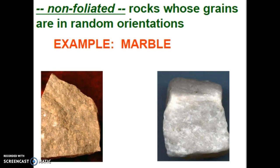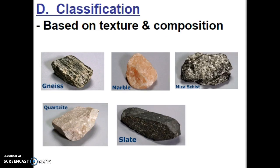An example of a non-foliated metamorphic rock is marble. Marble occurs when limestone undergoes heat, pressure, or chemical activity. We classify metamorphic rocks based on their texture — whether they're foliated or non-foliated — and their composition, meaning what types of minerals make up these rocks. Gneiss is formed from granite undergoing heat, pressure, or chemical activity. Marble is when limestone undergoes heat, pressure, or chemical activity. A mica schist is what occurs when certain types of sandstones undergo heat, pressure, or chemical activity.